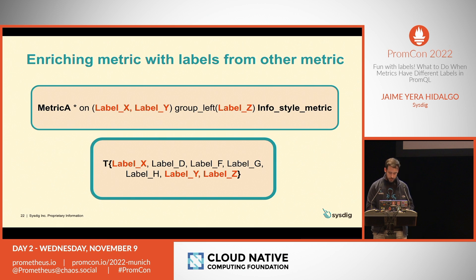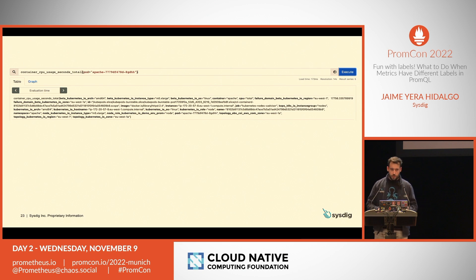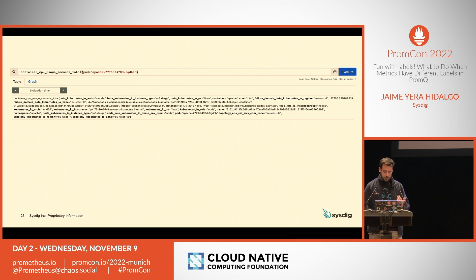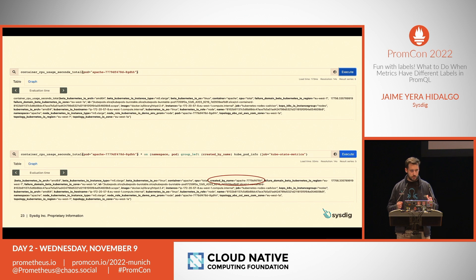So, an example here. I decided to take this simple metric that has the CPU usage for this container. I couldn't find the label name in the metric, so I decided to use this info-style metric called kube_pod_info that comes from kube-state-metrics. With this simple syntax, I make a group_left and take the information — obviously following the same use case as the first one: matching the labels that are common between each metric, and adding the new label. Just with that, we enrich our original metric.